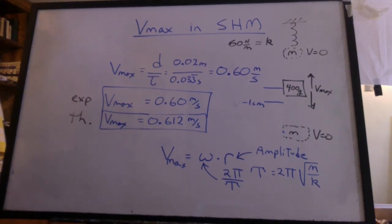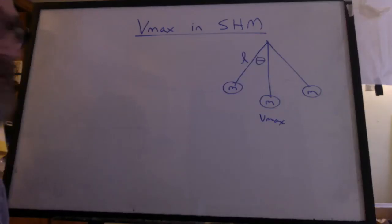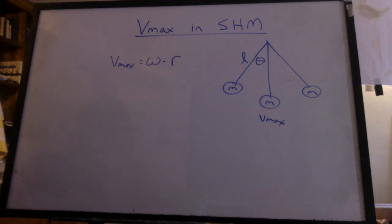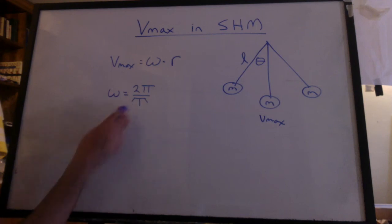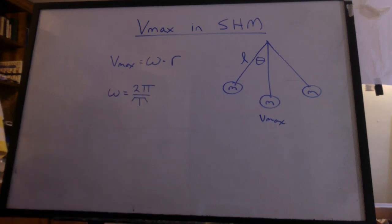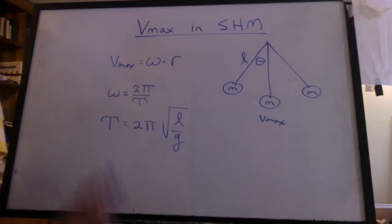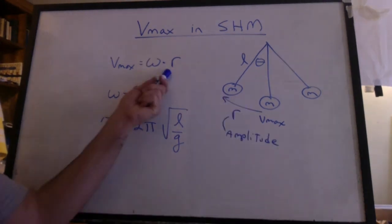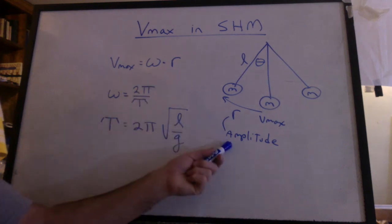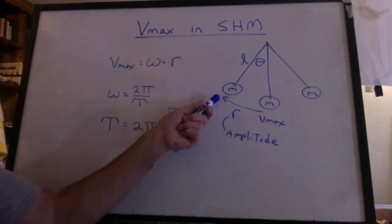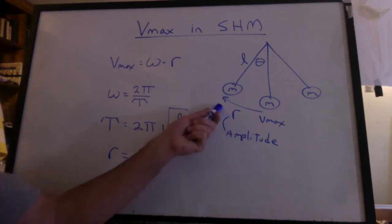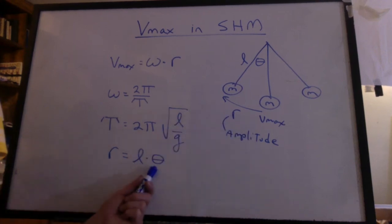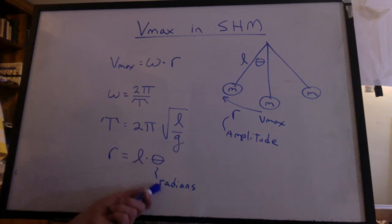Let's see how it's done for a pendulum. Here's the setup. Vmax occurs at the equilibrium position. We can still say the same thing: Vmax equals omega times r. Omega is still the same thing, 2 pi over the period. But the period is now 2 pi square root of l over g. r is still the amplitude, which is how far back we're pulling it when we release. r is an arc length, which is equal to l times theta, where theta is in radians.